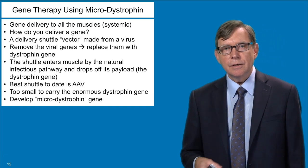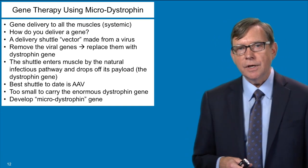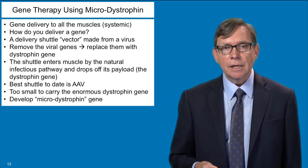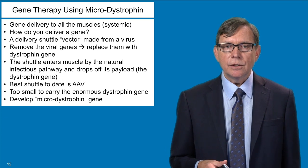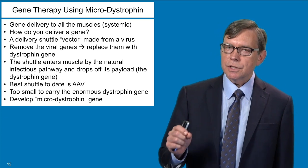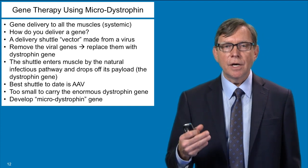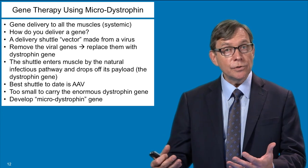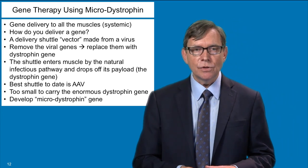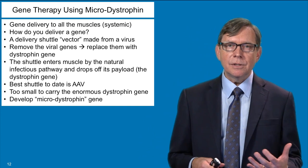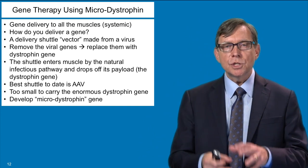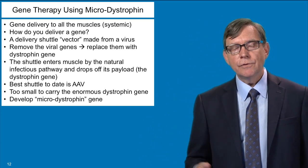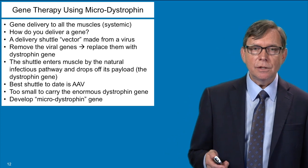There are a variety of shuttle vectors derived from different viruses showing promise for gene delivery. The ones that seem to be working best for muscle gene delivery are derived from a virus known as adeno-associated virus, or AAV. One of the limitations of these AAV viruses is that they're very small viruses, so the delivery shuttles we produce from them cannot hold the enormous dystrophin gene — the largest known gene. That's prompted us to develop smaller and smaller versions of the dystrophin gene that retain the ability to encode a functional protein and can be delivered by this gene delivery shuttle.